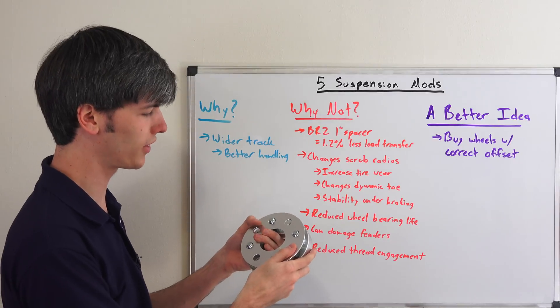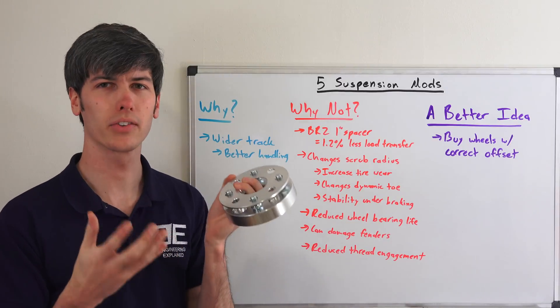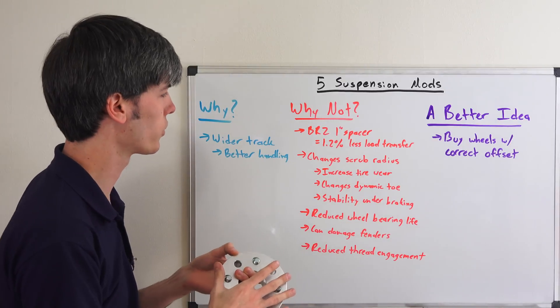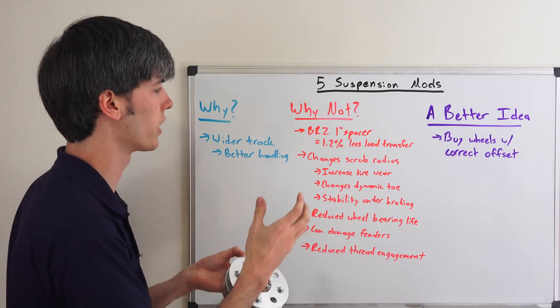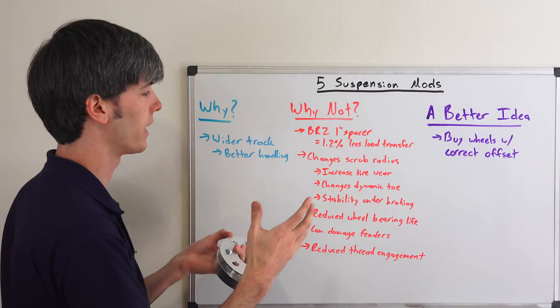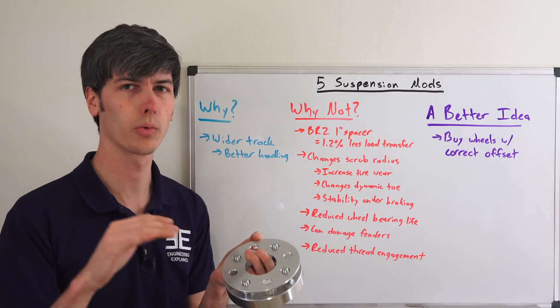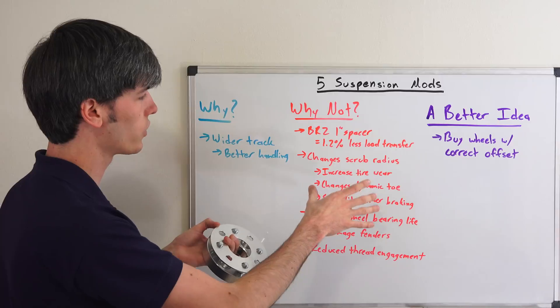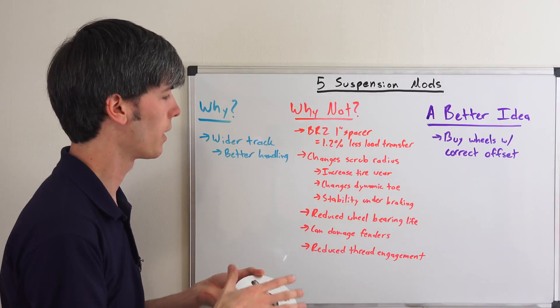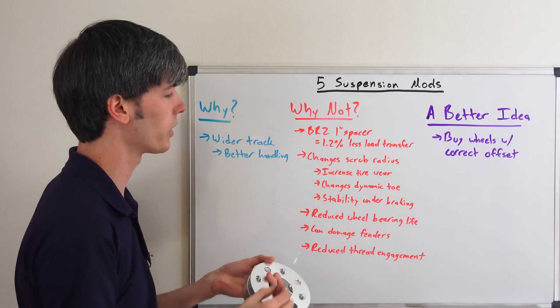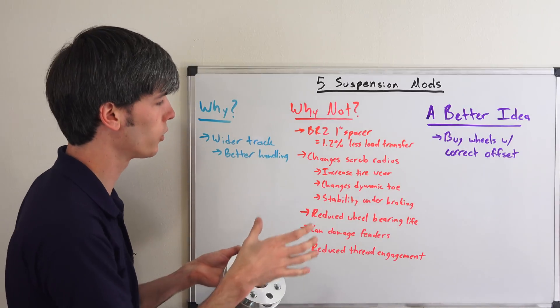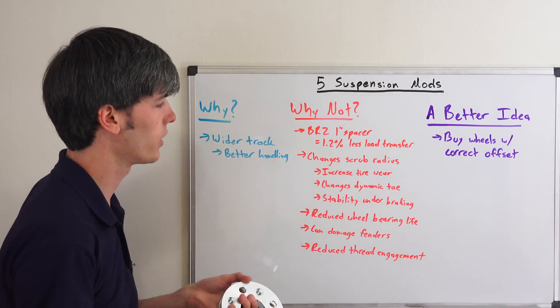But there are some serious consequences that could go along with it. This may not seem like a suspension mod, but it's going to have an impact on your suspension. It will change your scrub radius, which can increase the amount of tire wear. That changes also your dynamic toe, so when you're braking or accelerating it changes your toe characteristics.